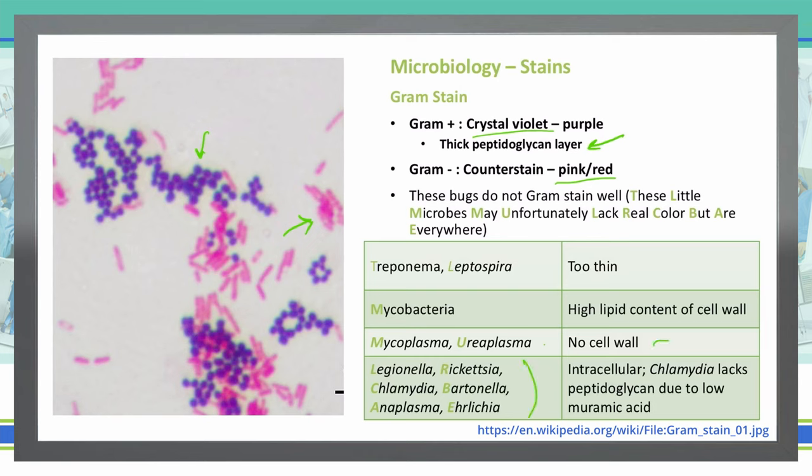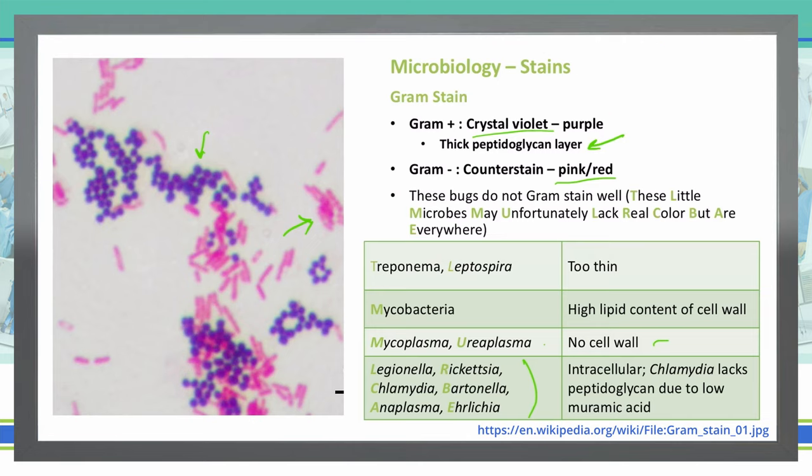And then finally, these six — Legionella, Rickettsia, Chlamydia, Bartonella, Anaplasma, and Ehrlichia — are intracellular organisms. Specifically with Chlamydia, it is an organism that lacks a peptidoglycan layer due to its low muramic acid levels.